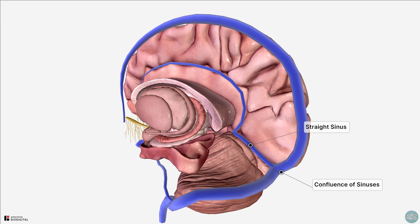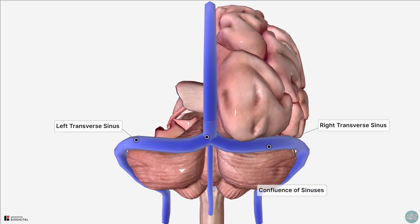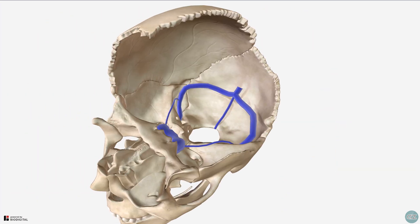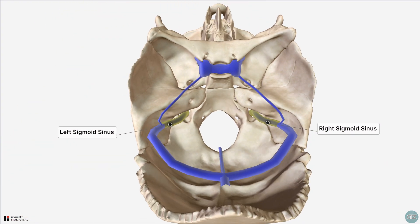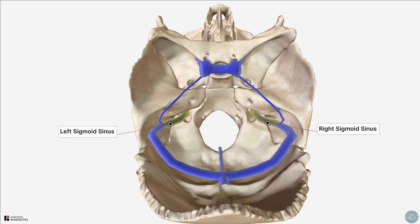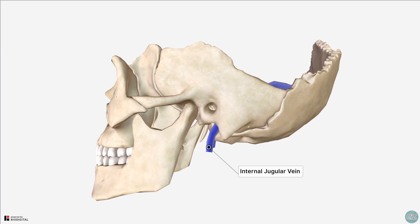As a point of terminology, the confluence is also referred to as the torcular herophyli. Extending laterally from the confluence of sinuses are the transverse sinuses, which course within a groove in the occipital bone and drain into the sigmoid sinuses. It's very common for one transverse sinus to be larger than the other due to asymmetric drainage of blood; the larger transverse sinus is referred to as the dominant sinus. The sigmoid sinus gets its name from its curved, S-shaped morphology and passes into the jugular foramen to drain into the internal jugular vein.